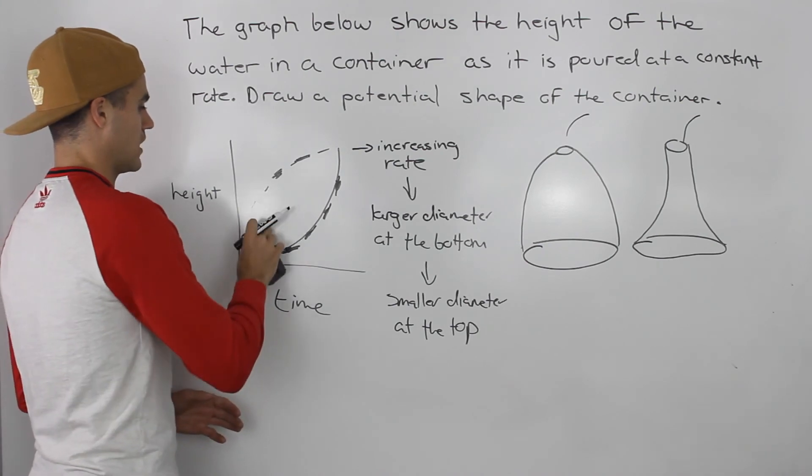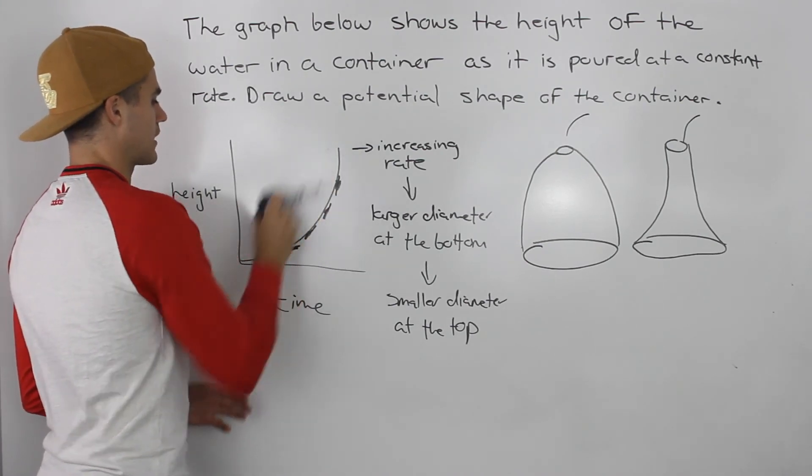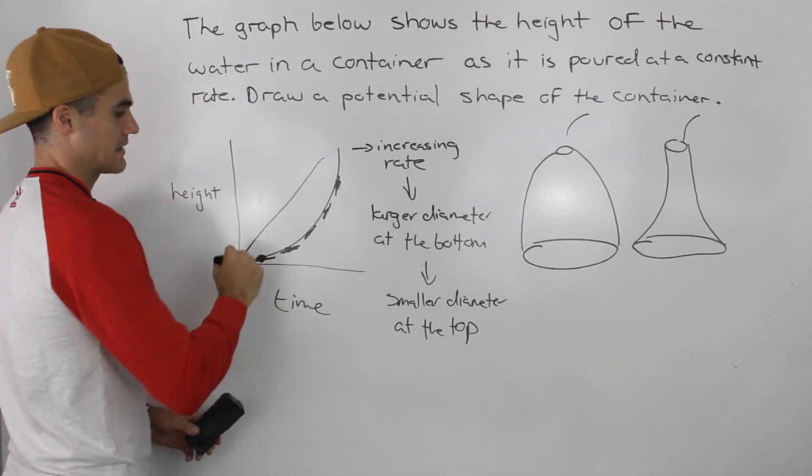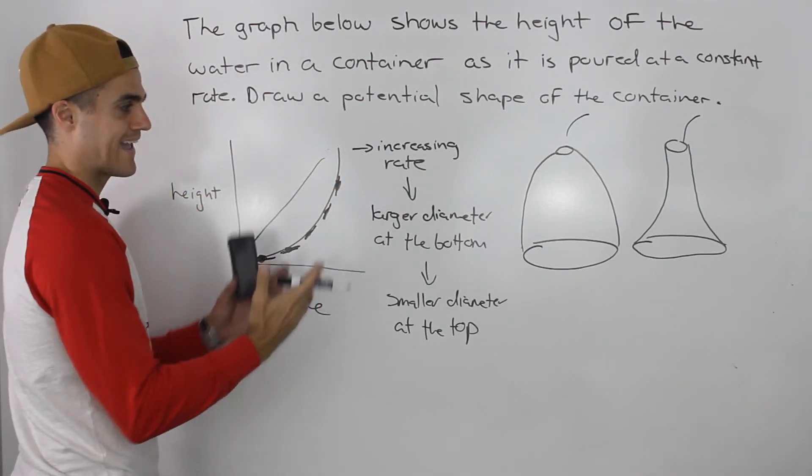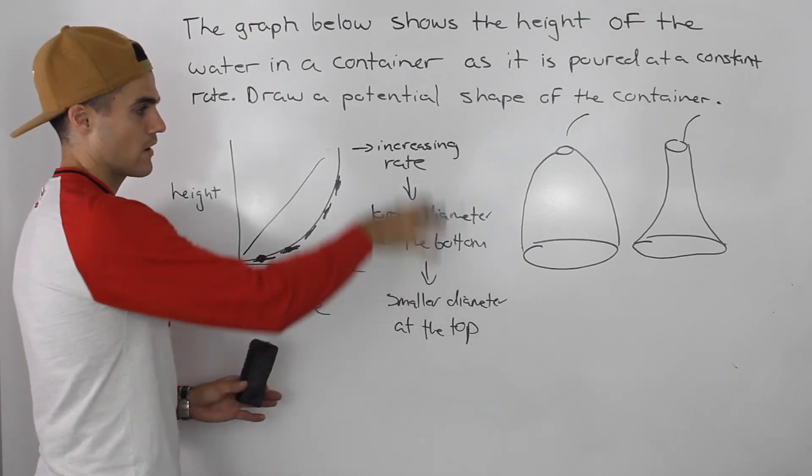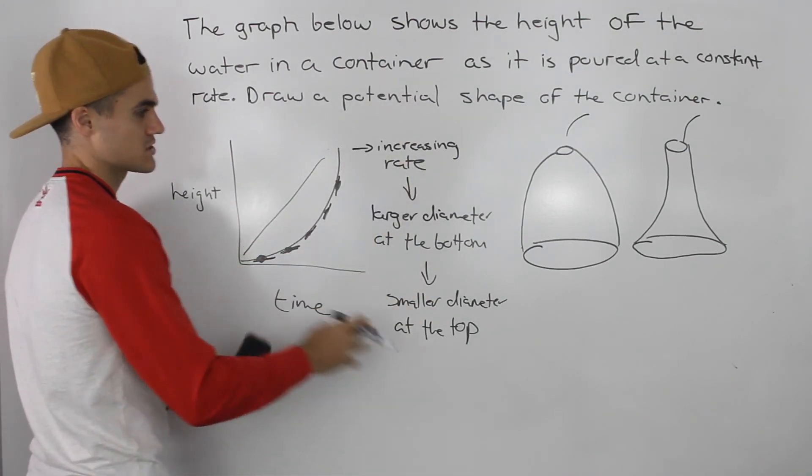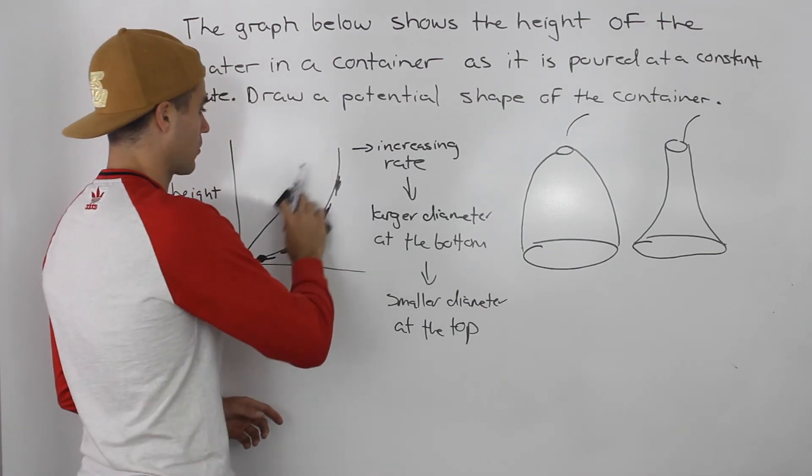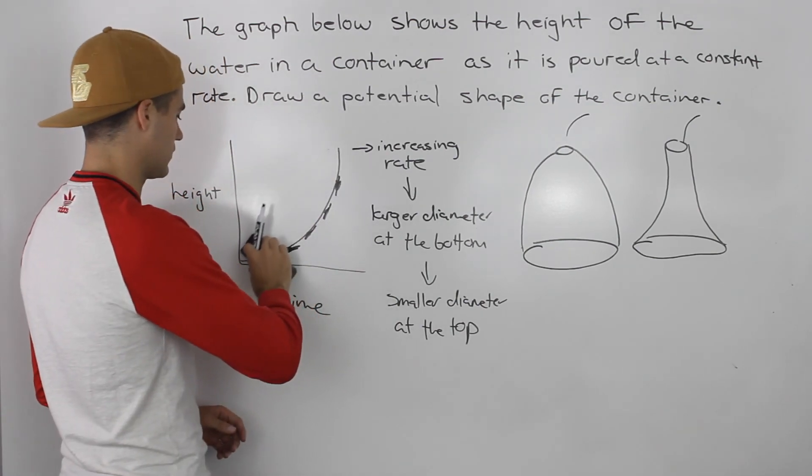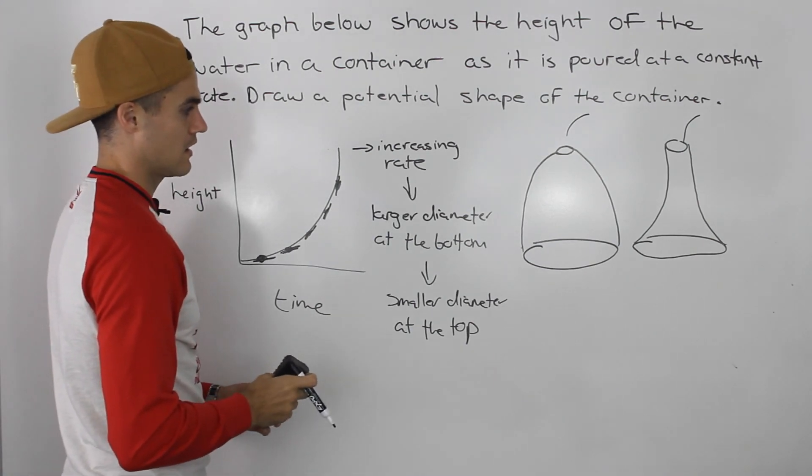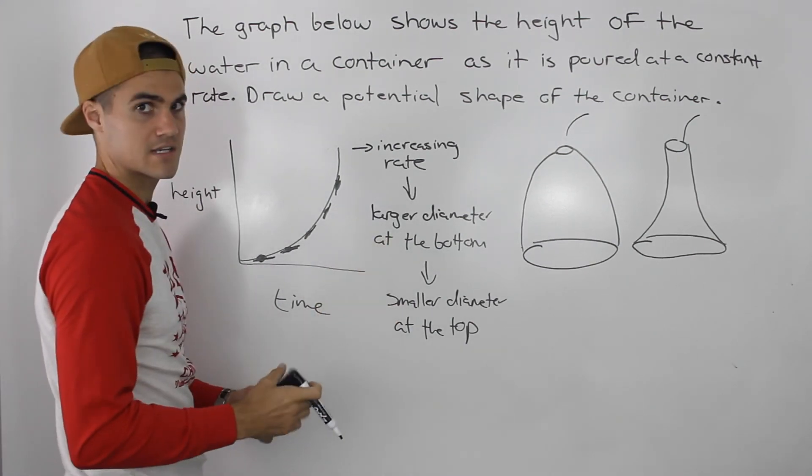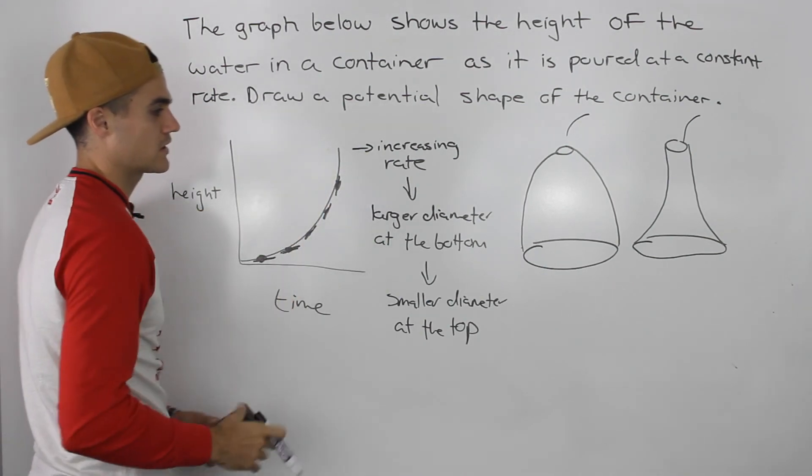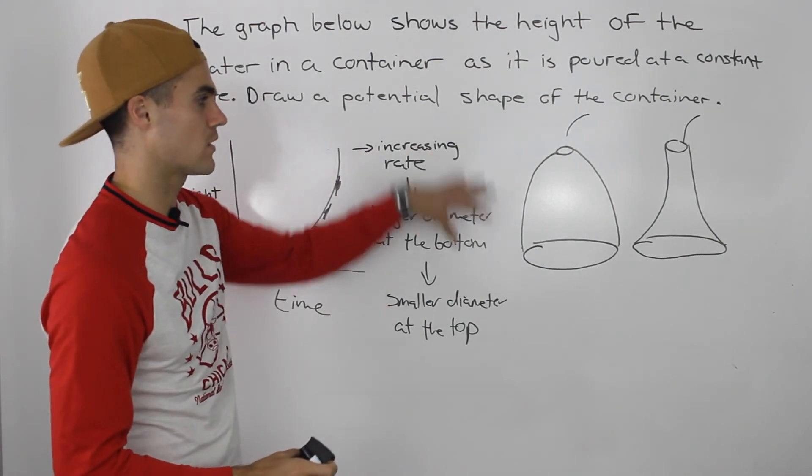What if the graph was a straight line? So what if it goes like this? Well that means that the height is changing at a constant rate, so the diameter is constant throughout the container. So it would just be like a cylinder container, like a can of coke, for example. If you're pouring water into a can that is in the shape of a cylinder, then the height versus time graph would just be a straight line. Diameter is constant throughout the container.